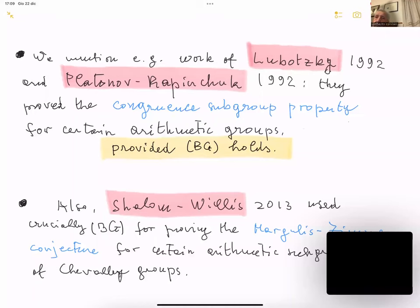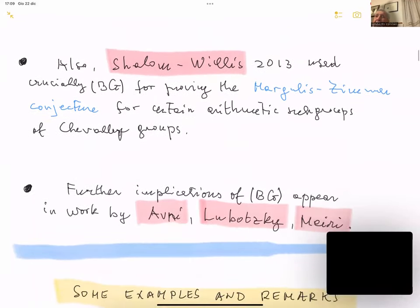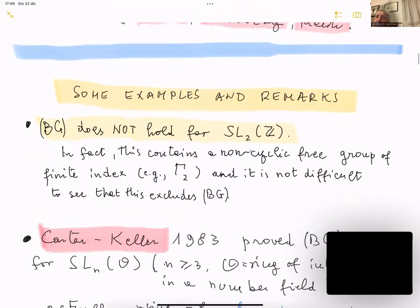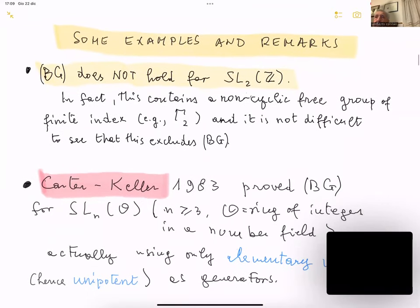Shalom and Willis used bounded generation crucially for proving the so-called Margulis-Zimmer conjecture, which concerns commensurability of subgroups of arithmetic groups of Chevalley groups. This was a completely independent problem where bounded generation proved influential. Further implications appear in work of Avni, Lubotzky, and Mayer.